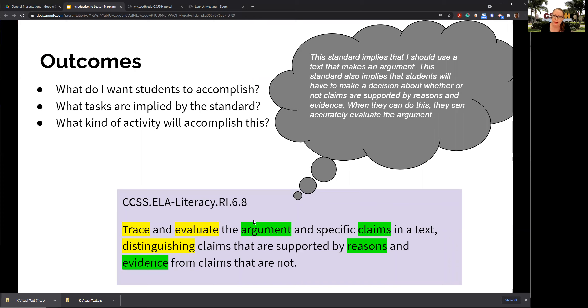Think about what tasks are implied by this standard. What kind of activity might accomplish this? For this particular one, it seems to imply that I should use a text that makes an argument because students have to distinguish claims in a text and figure out the ones that are supported by reasons and evidence and the ones that are not. It also implies they'll have to make a decision about whether or not the claims are supported by evidence. How could I do that? Start thinking about that. There are a lot of different ways. Remember our route from point A to point B—there are a lot of routes I can take. It doesn't have to be done one way, but think of a way that you are comfortable with that would make sense to your students.